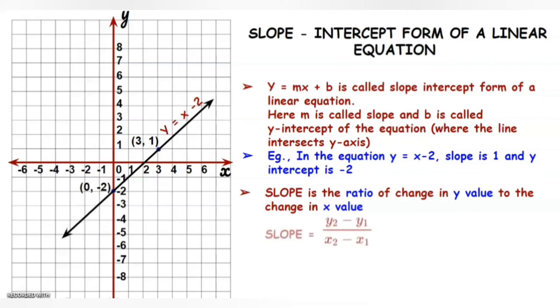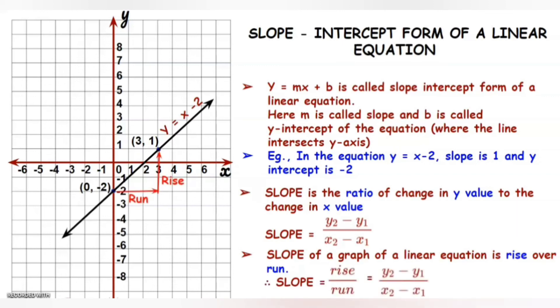So, slope can be written as y2 minus y1 by x2 minus x1. Slope of a graph of a linear equation also can be defined as rise over run. Therefore, slope is equal to rise by run which is equal to y2 minus y1 by x2 minus x1.